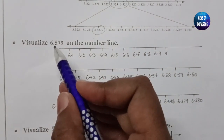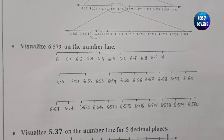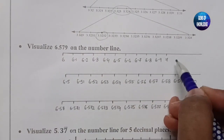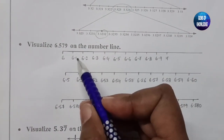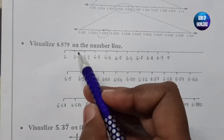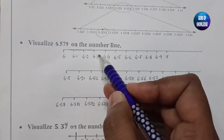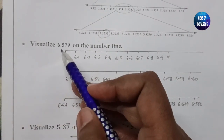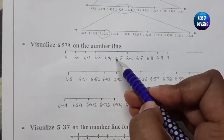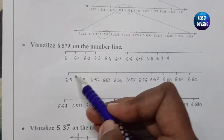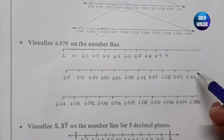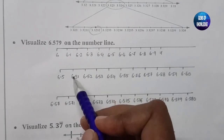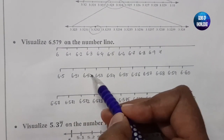Now visualize 6.579 on the number line. Since 6.579 starts with 6.5, it lies between 6 and 7. We expand the number line between 6 and 7 to get 6.1, 6.2, 6.3, 6.4, 6.5, 6.6, 6.7, 6.8, and 6.9. We take 6.5 and 6.6, and expand again, getting 6.50, 6.51, 6.52, 6.53, 6.54, 6.55, 6.56, 6.57, 6.58, 6.59, and 6.60.